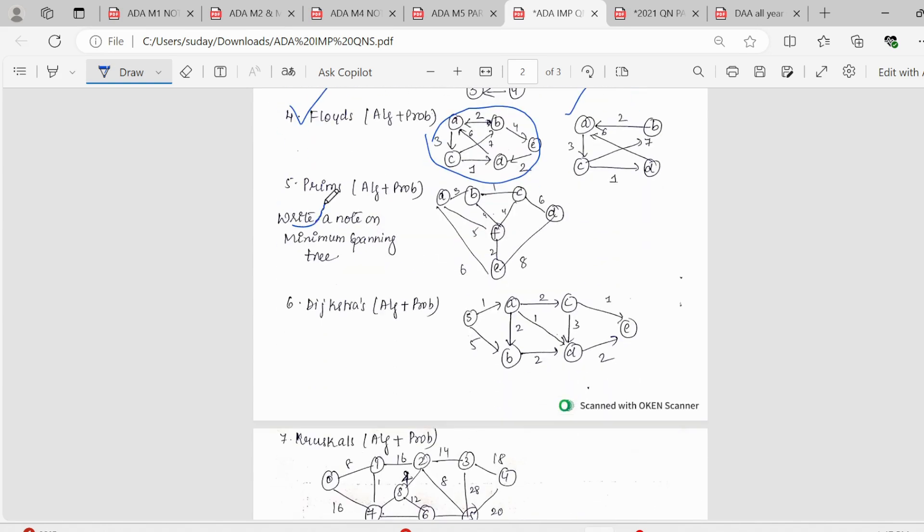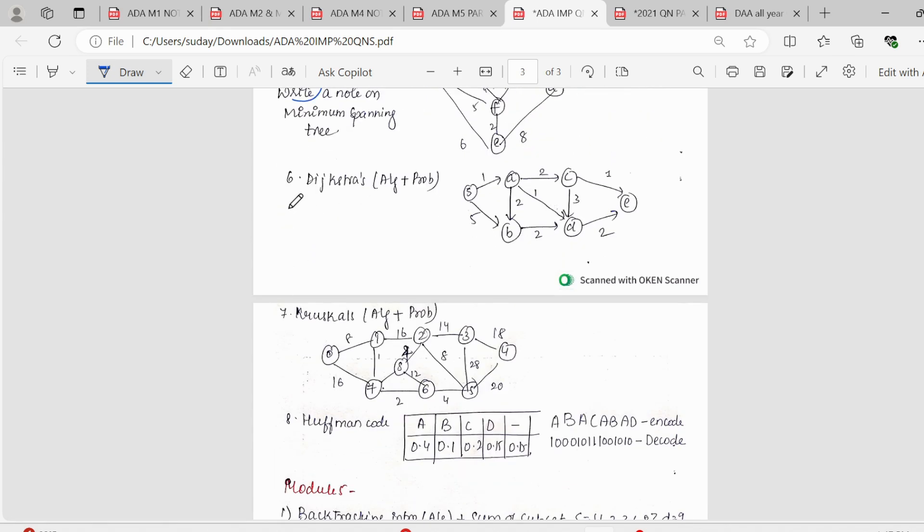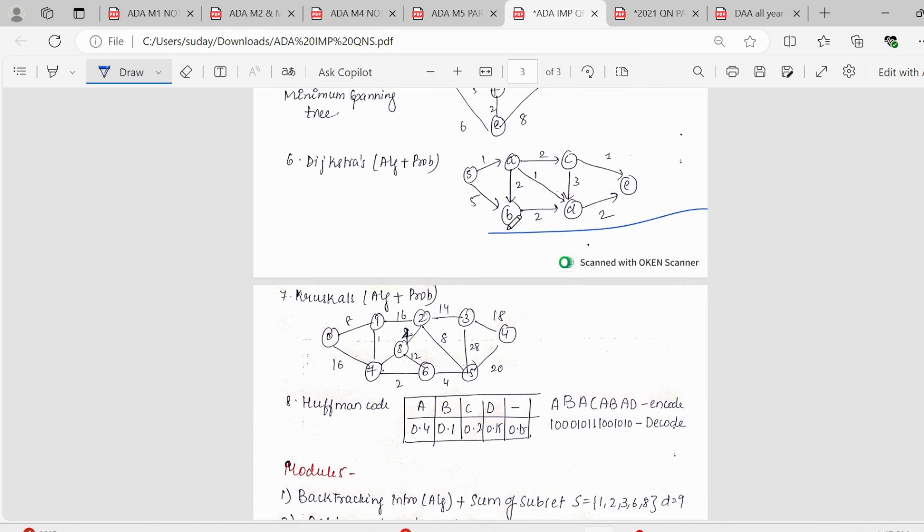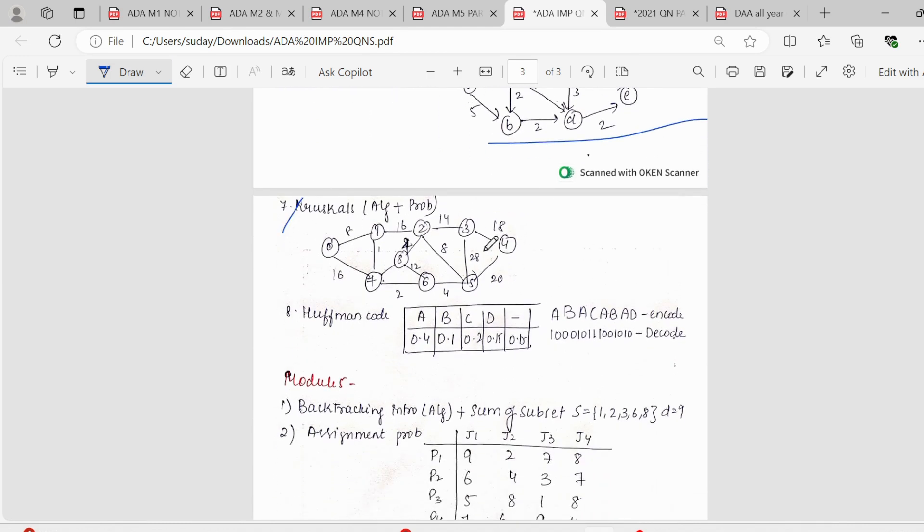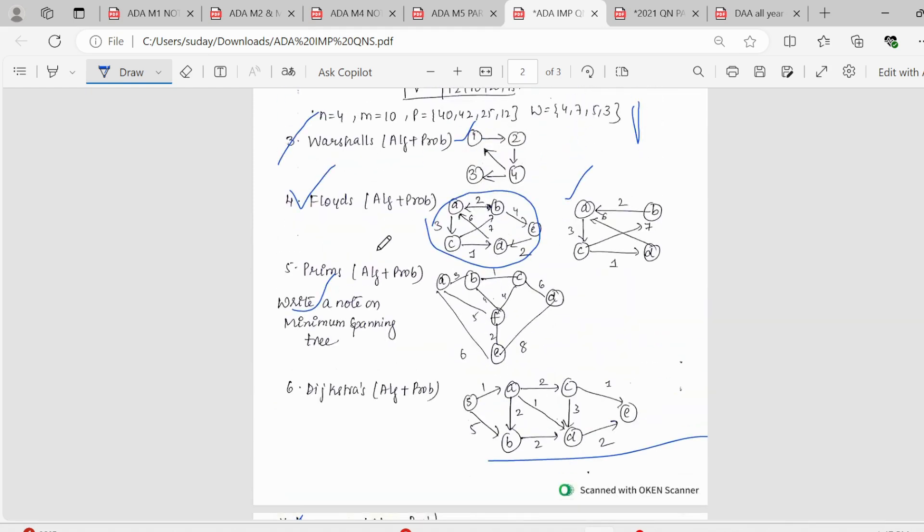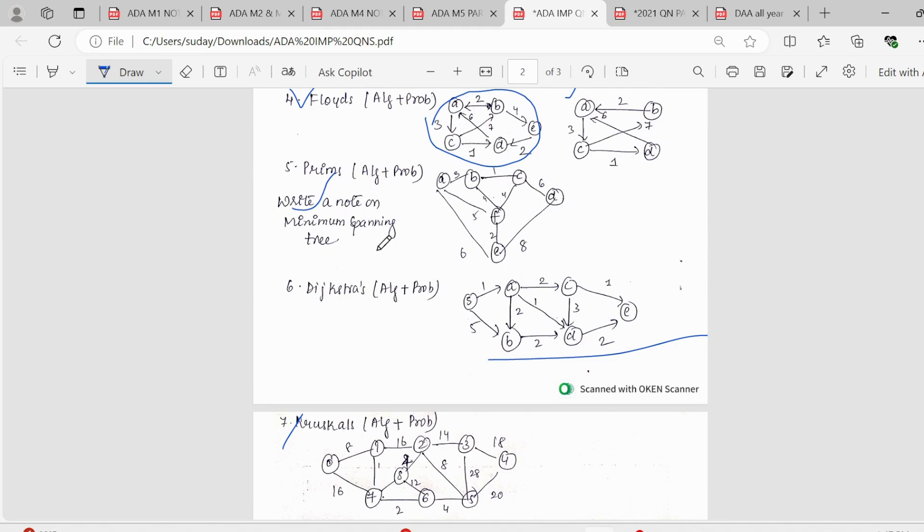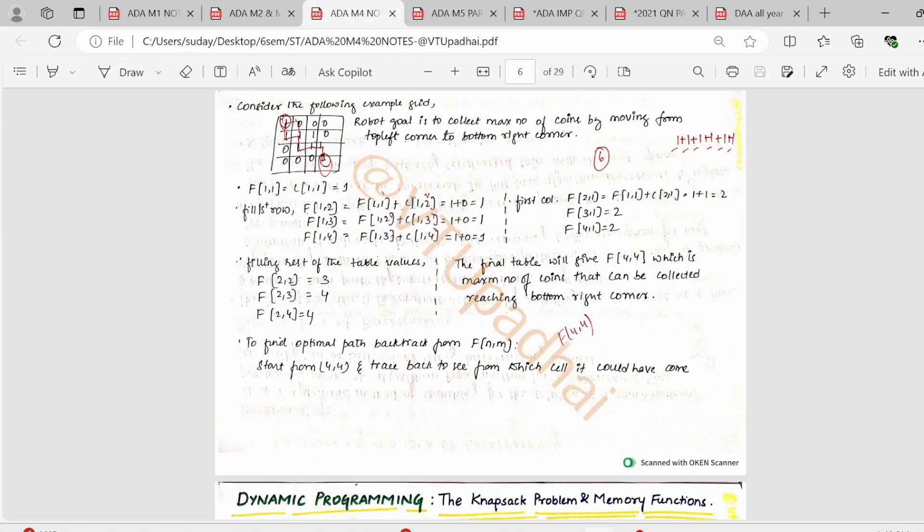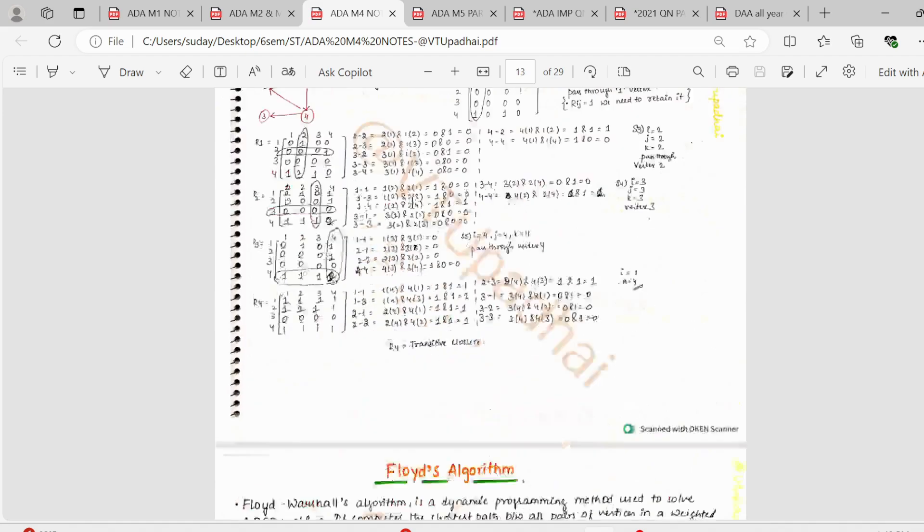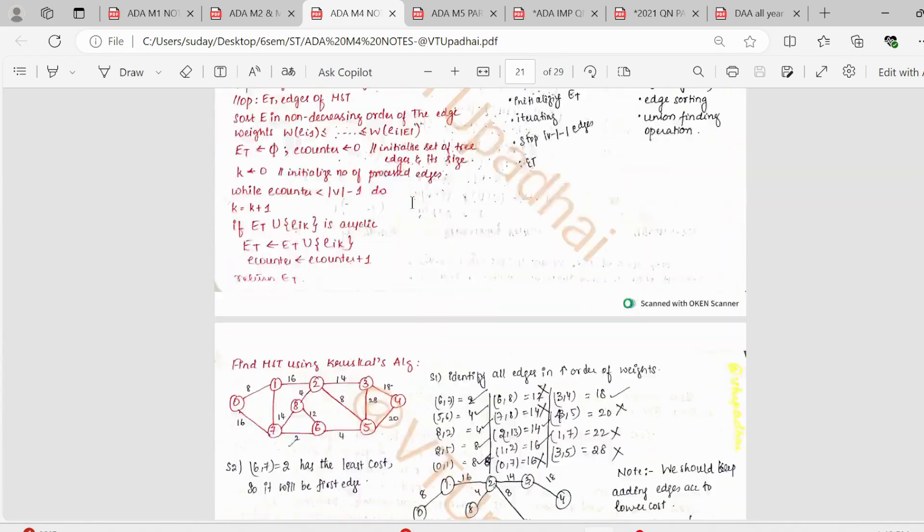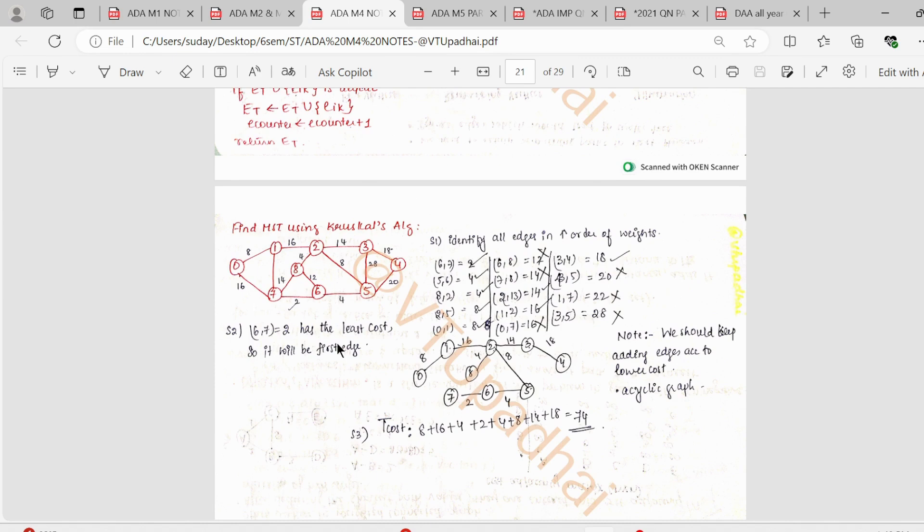Coming to Prim's algorithm, they can ask a definition of minimum spanning tree. And then this question is a standard question again. Coming to Dijkstra's algorithm and problem, this is a standard question which needs to be solved. Next, Kruskal's algorithm and problem. Kruskal's method is pretty easy to solve and you can easily score marks. If Kruskal's present in exam question paper, I would suggest you to write this and not go for any other method. Suppose if you're solving it for Warshall's or Floyd's, even with the slightest mistake, your entire calculation can go wrong.